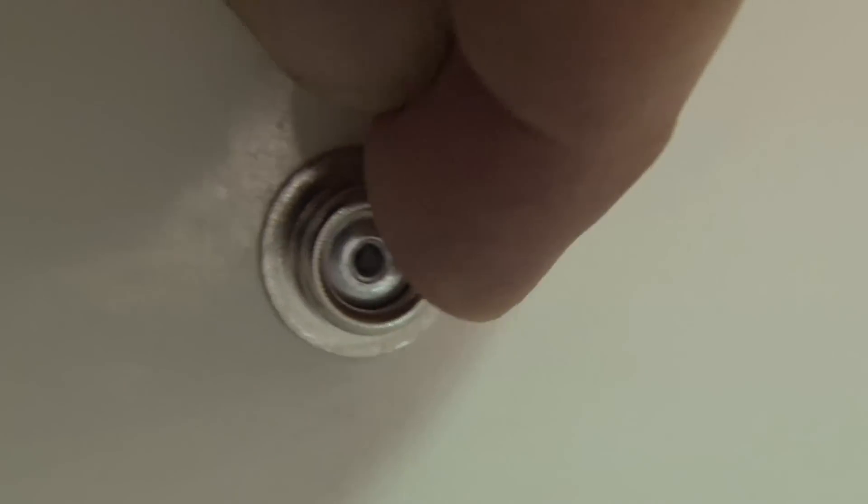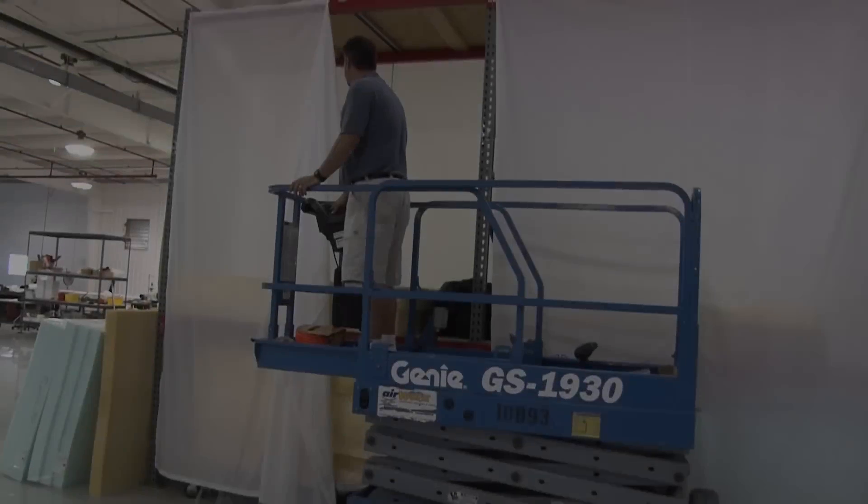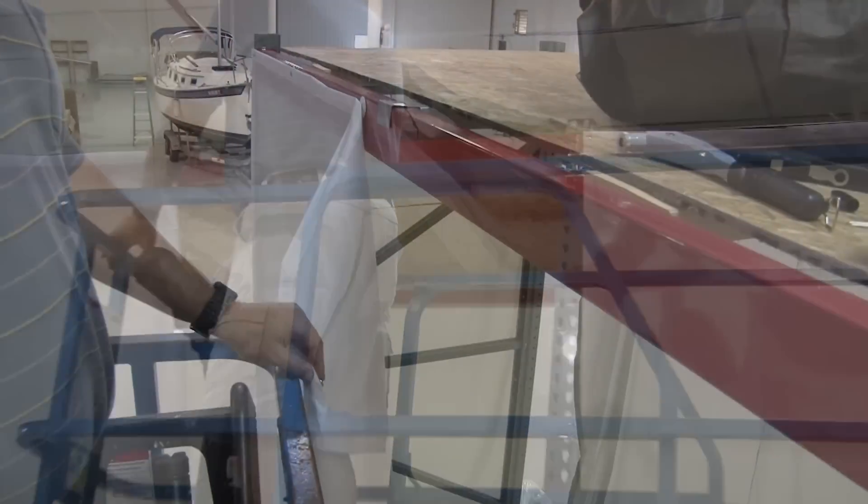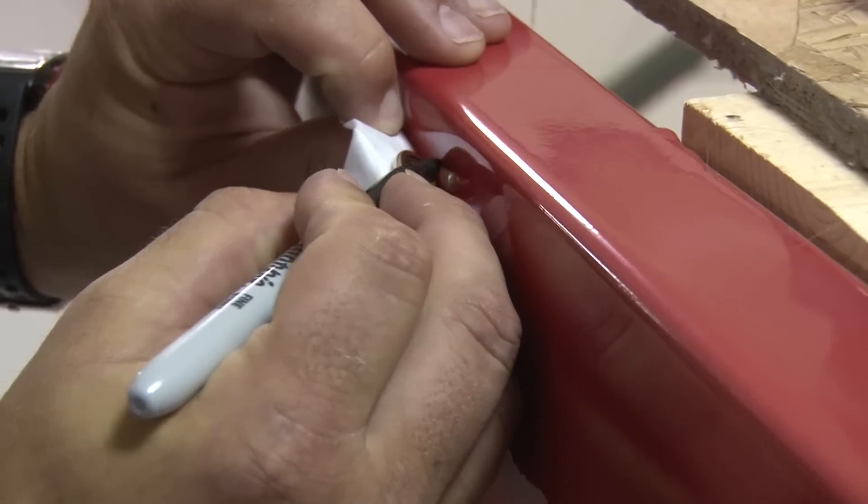Now as we grab the snap stud, you'll notice that it is firmly set in place. It is very solid. This steel frame structure stores some of Sailrite's foam. We're going to cover it with fabric using snaps.